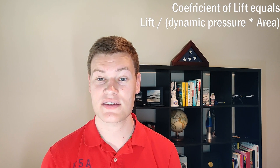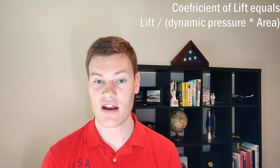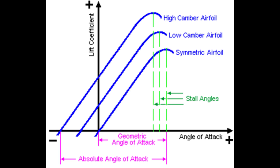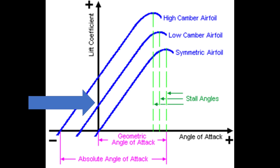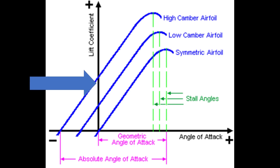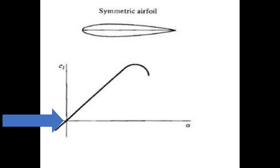We can demonstrate this graphically using what's known as a coefficient of lift. The coefficient of lift is a measurement of lift that takes into consideration the dynamic pressure in the area of the wing, giving us a better idea of how the wing operates at different angles of attack. When we graph the coefficient of lift versus the angle of attack we get a graph showing three different airfoils: one with a high amount of camber, one with a small amount of camber, and a symmetric airfoil. Any airfoil with camber will generate lift even at an angle of attack of zero, but for a symmetric airfoil the coefficient of lift is always zero when the angle of attack is also zero.